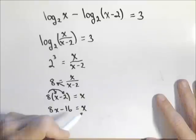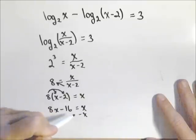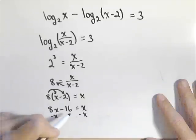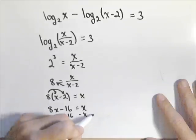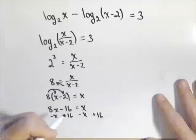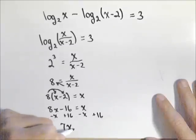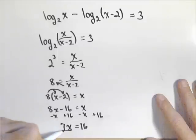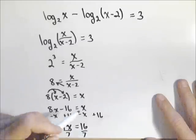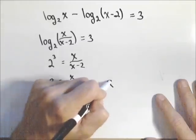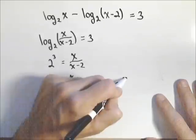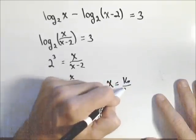Now we're going to isolate the x, so let's subtract x off of both sides, and we'll add 16 to both sides. What we end up with is seven x equals 16, and our last step will be to divide both sides by seven. So we end up with x equals 16 over seven.